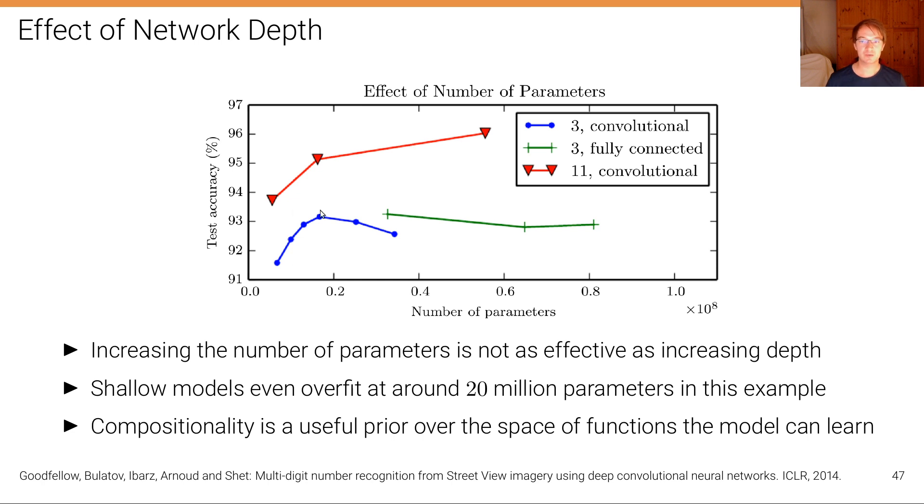So here we have a convolutional network with three hidden layers and we have one with 11 hidden layers here. And you can see that with three hidden layers, if we just keep increasing the number of parameters, at about 20 million parameters we start to see a decline in test accuracy, and this is the overfitting effect. We're increasing the model capacity but we're overfitting. However, if we're using a deeper network, we can increase the number of parameters more while still increasing test accuracy or improving generalization performance. So it seems also empirically that compositionality is really a useful prior over the space of functions the model can learn. That's it for today.